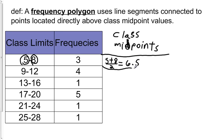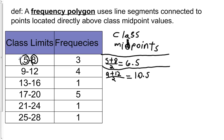The next class midpoint is going to be the arithmetic mean of that class's limits: 9 plus 12 over 2, which is 21 over 2, and that's 10.5. Now, when finding class boundaries previously, I showed a trick where once you find the first class boundary, you can use the class width — which is 4 in this example — and just keep adding it to get all the class boundaries. The same thing works for class midpoints.